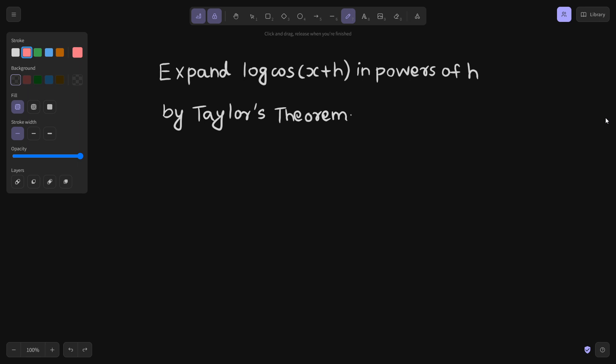So what are the steps that we follow in case of Taylor's theorem? First step is write whatever function is given equal to f(x+h). So you will have to write f(x+h) = log cos(x+h). This is the first.